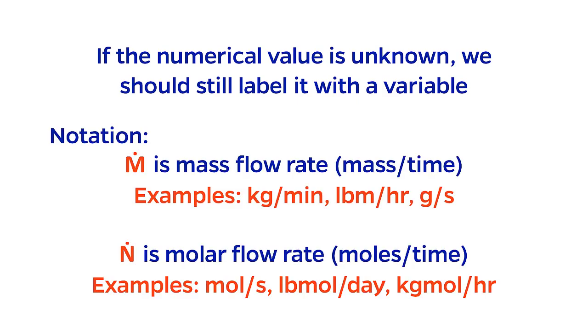The notation that I use for variables is m dot, which represents mass flow rate, or n dot, which represents molar flow rate. Possible units for the mass flow rate include kilograms per minute, pounds per hour, grams per second, or really anything with the dimensions of mass per time.